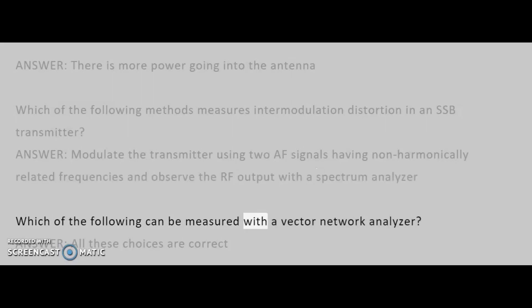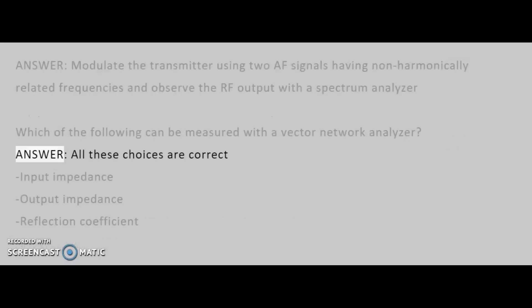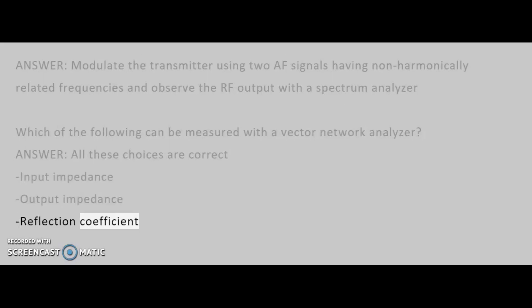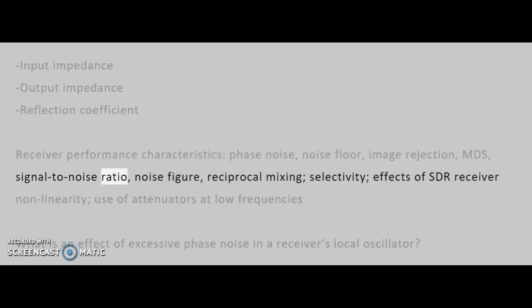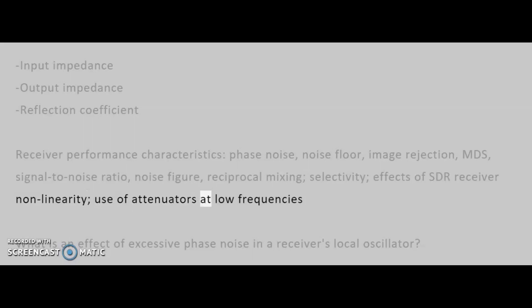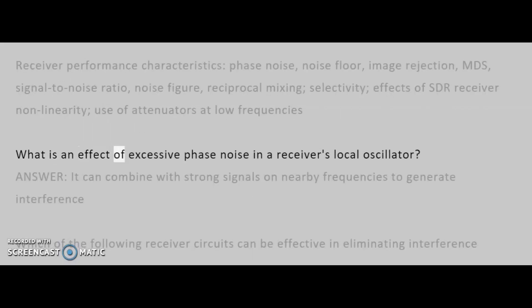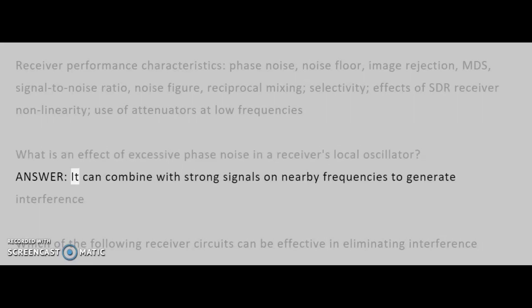Which of the following can be measured with a vector network analyzer? Answer: All these choices are correct. What is an effect of excessive phase noise in a receiver's local oscillator? Answer: It can combine with strong signals on nearby frequencies to generate interference.